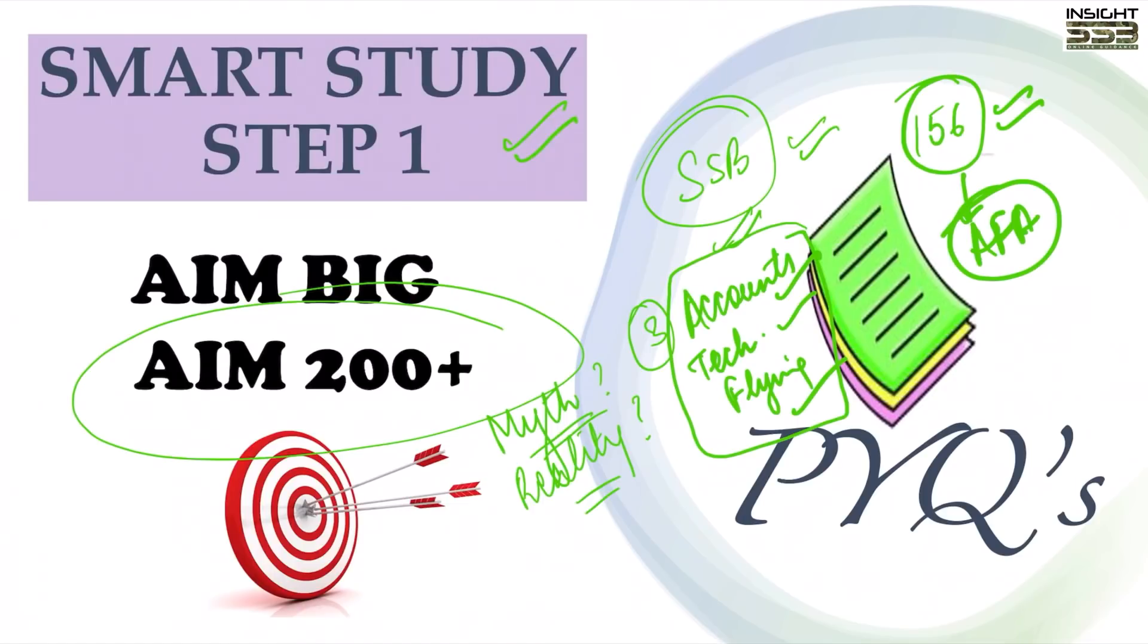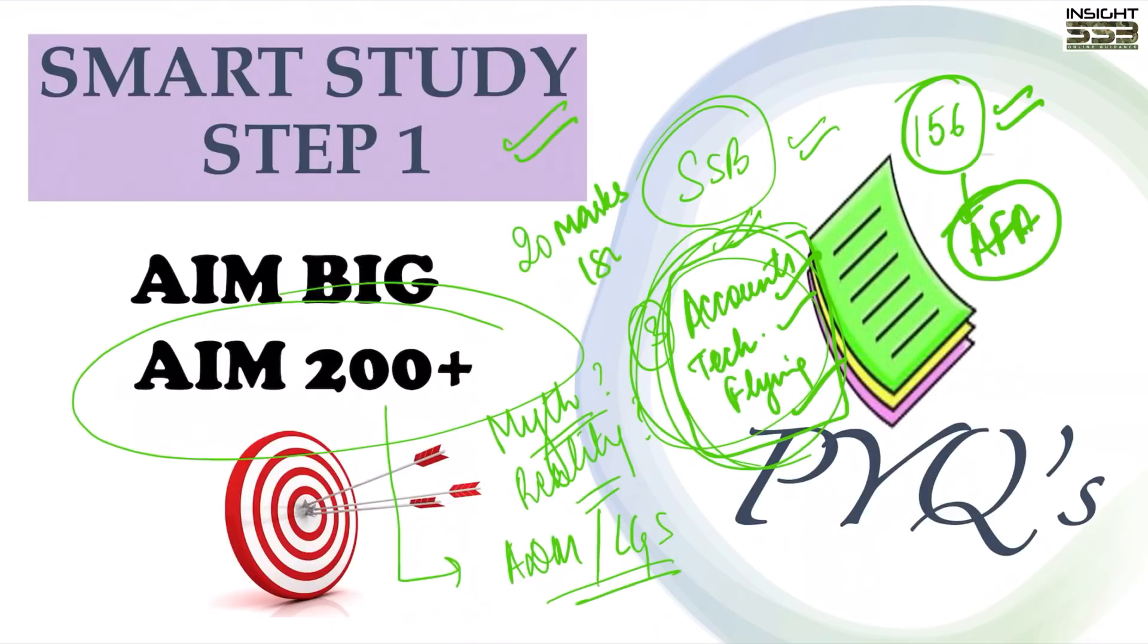But it is a reality - 200 plus is a reality for all of those who are going for Adam and logistics branch. So please check what your branch is and accordingly you will do hard work. For these three branches, I will just suggest one thing. Even if you get around 20 marks over the cut off, if you are at 180 marks, you can be sure shot about your selection.